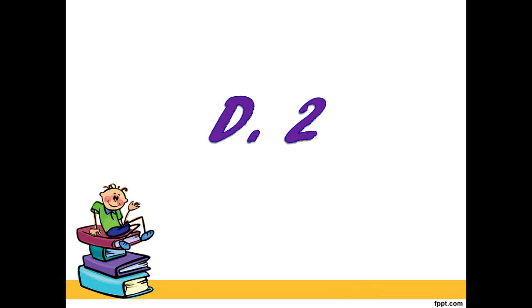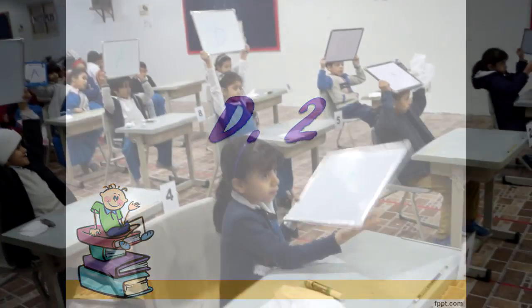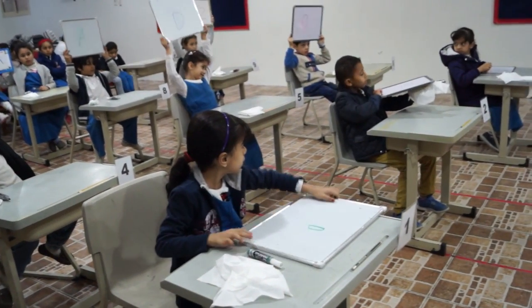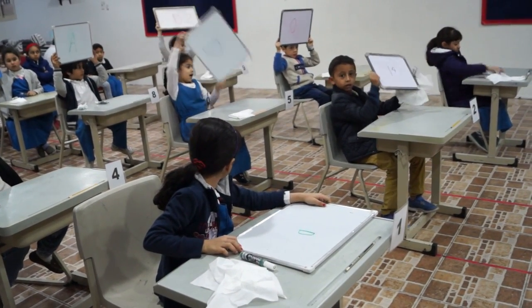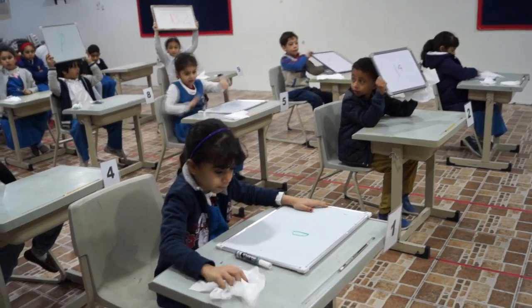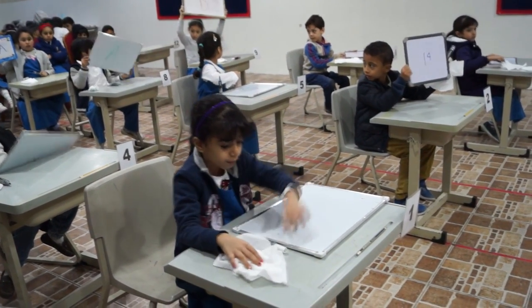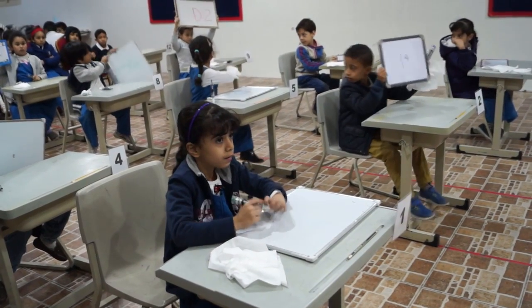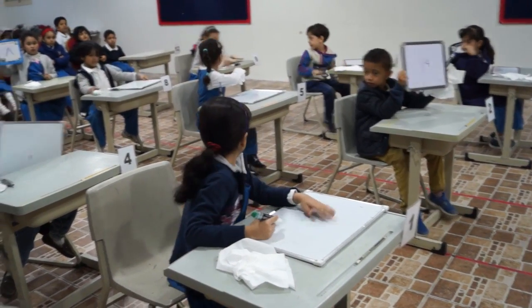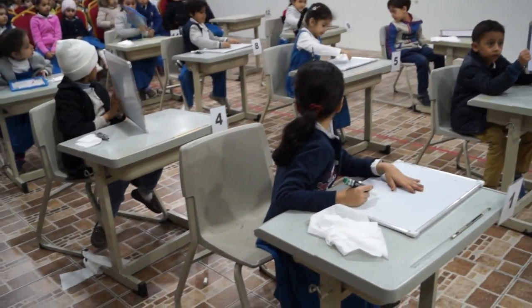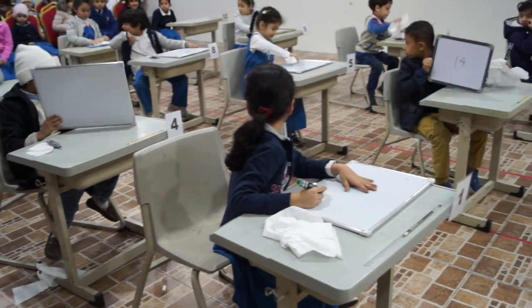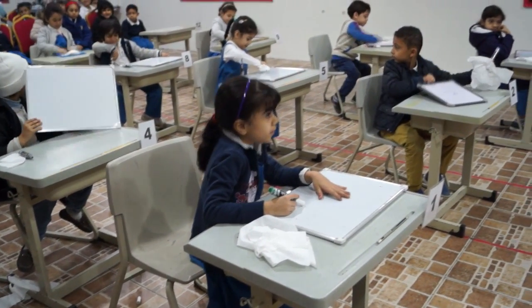Okay, answer up. The correct answer is letter D, 2. Number 1, got it correct. Number 2, no. 3, no. 4, got it correct. 5, got it correct. 6, correct. 7, correct. 8, no. D, correct. 9, correct. 10, correct. 11, no.